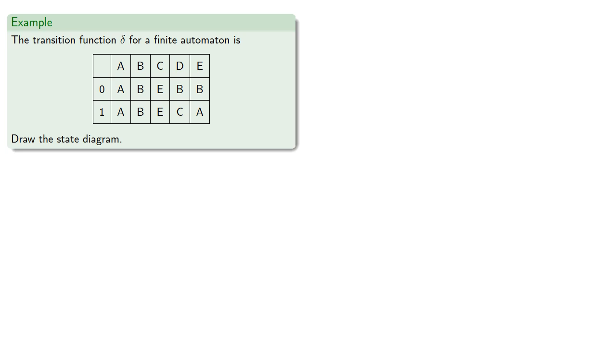To really understand this, let's consider a different transition function. Let's say the transition function for a finite automaton is this. Let's draw the state diagram.